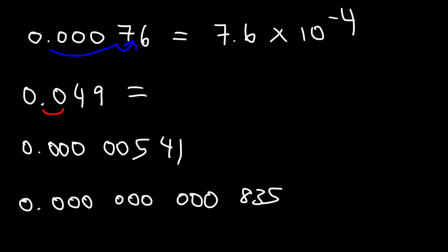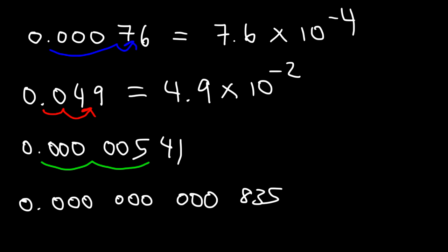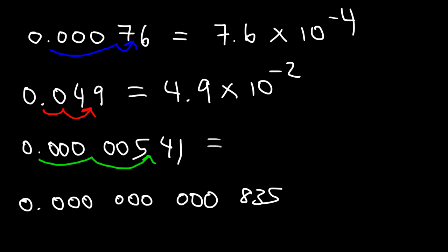For this next one, I've got to move it 2 units to the right, so that's going to be 4.9 times 10 to the minus 2. For the third example, I need it to be between the first two numbers — between 5 and 4 — moving it 6 units to the right, so this is going to be 5.41 times 10 to the negative 6.